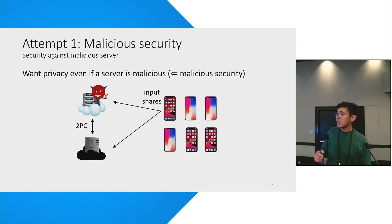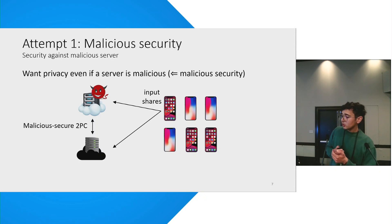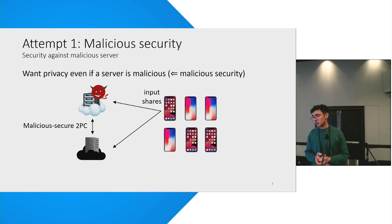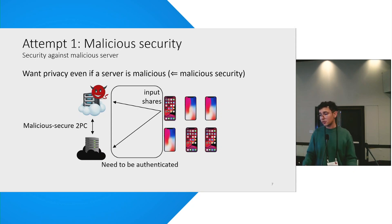I will call that attempt one at achieving this privacy goal. The first thing we need to do is change the 2PC protocol that runs between the servers to a malicious secure 2PC protocol — earlier it was a semi-honest protocol. And as soon as we do that, we also need to change the way clients secret share their inputs. Clients now need to authenticate their inputs to the servers so that authenticated inputs can be used in the malicious secure protocol.